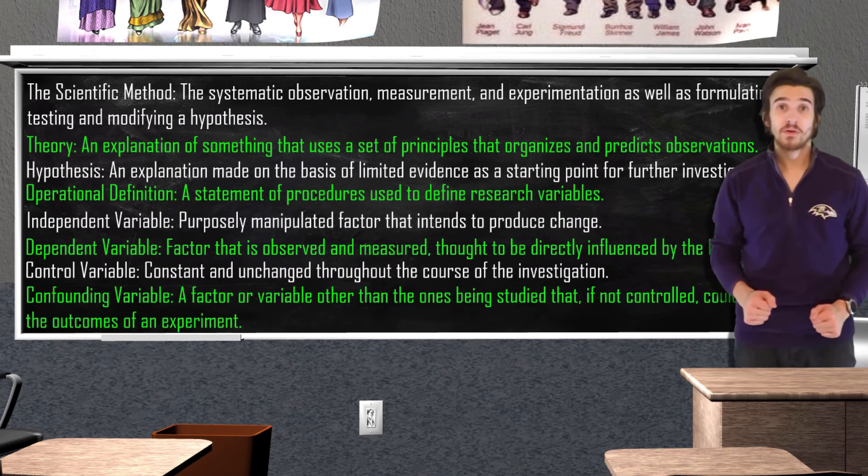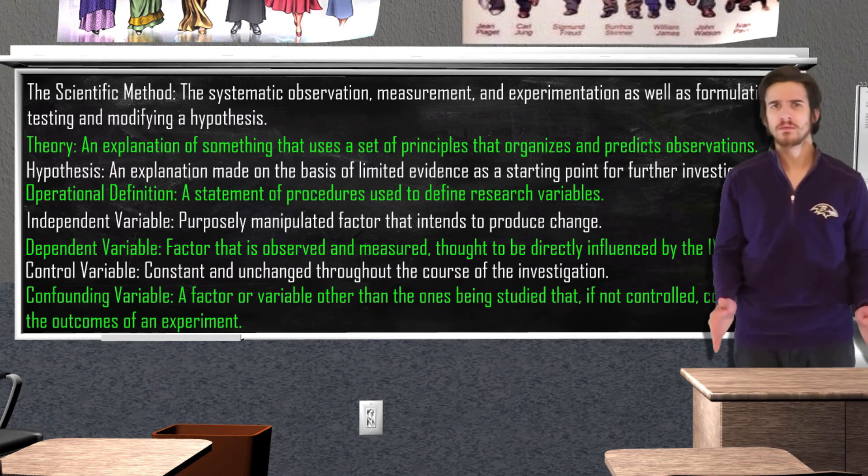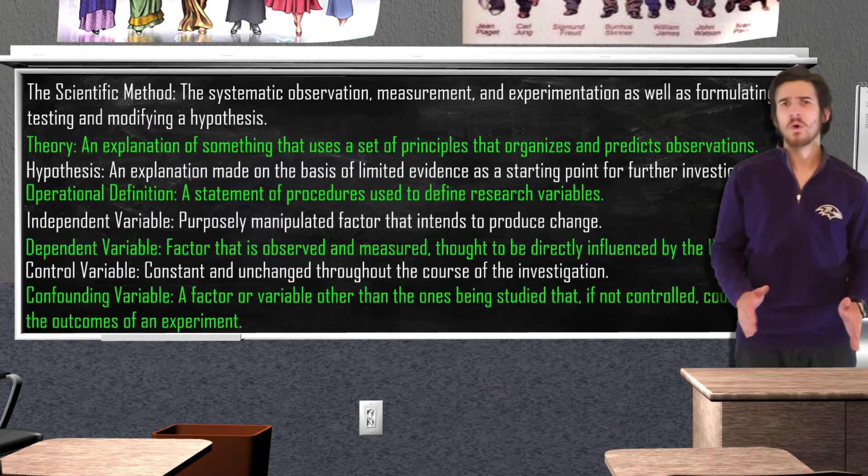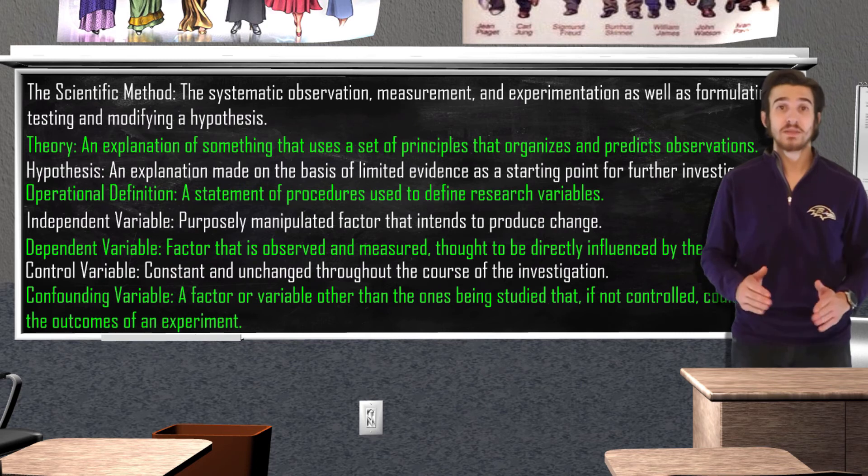A confounding variable in our experiment could have to do with gender. Would our scenario change if it was a man in distress versus a woman? Is a lone woman more likely to help a man in distress or another woman? What about a man? These are the types of questions that researchers must ask themselves before conducting their experiment in order to ensure the most accurate results.